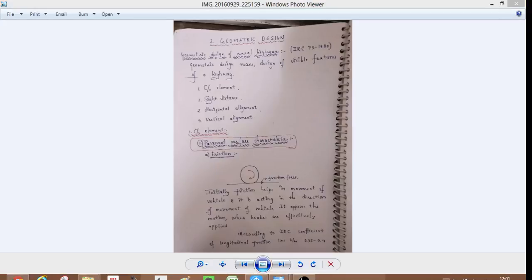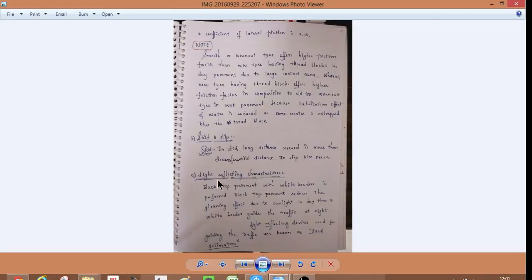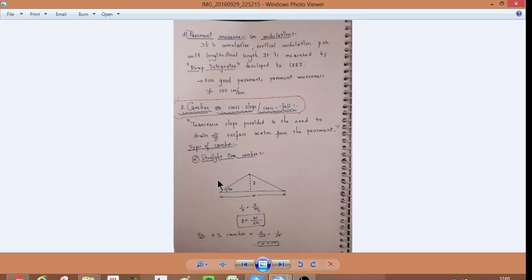We are seeing the geometric design. There are different things. There is a horizontal alignment, vertical alignment, cross sectional and cross sectional. So friction, we have friction, skip deck, see camber and cross slope are cross fall.